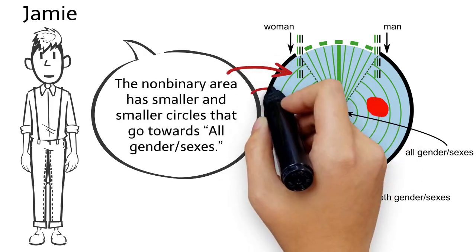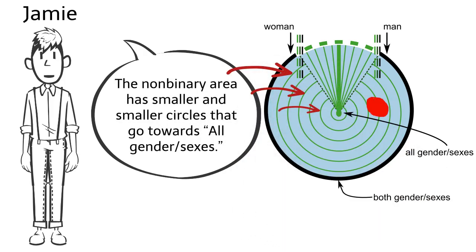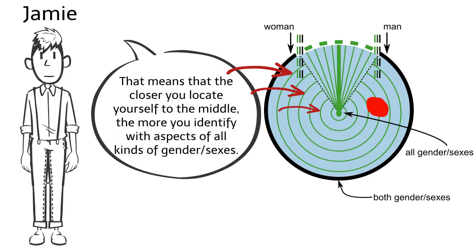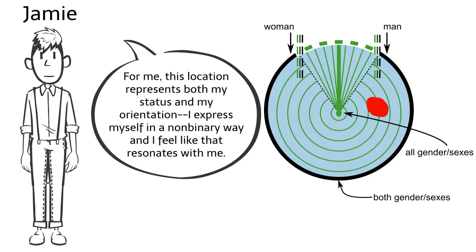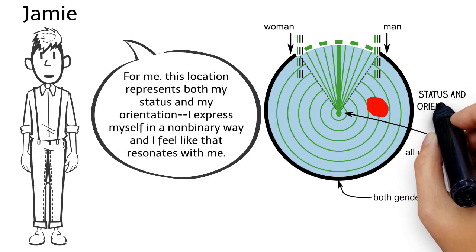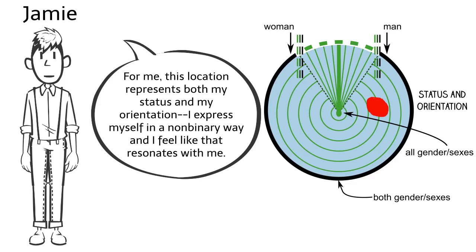The non-binary area has smaller and smaller circles that go towards all gender sexes. That means that the closer you locate yourself to the middle, the more you identify with aspects of all kinds of gender sexes. For me, this location represents both my status and my orientation. I express myself in a non-binary way and I feel like that resonates with me.